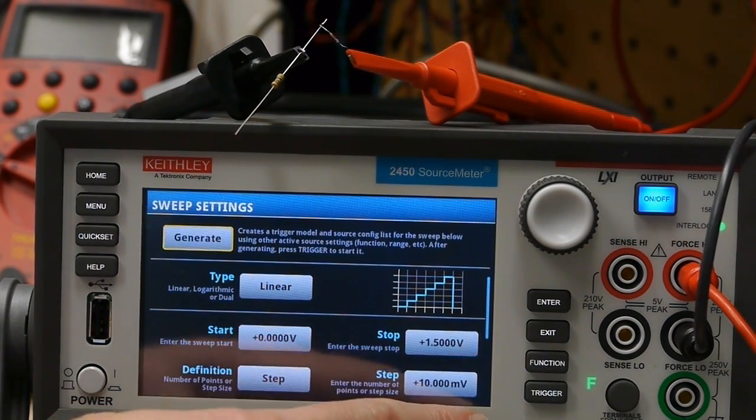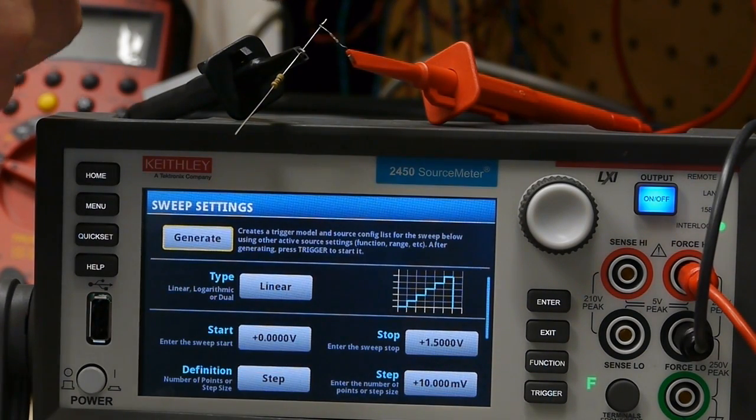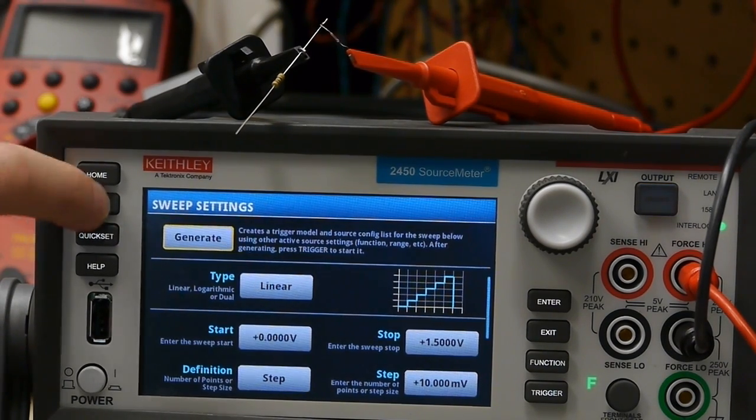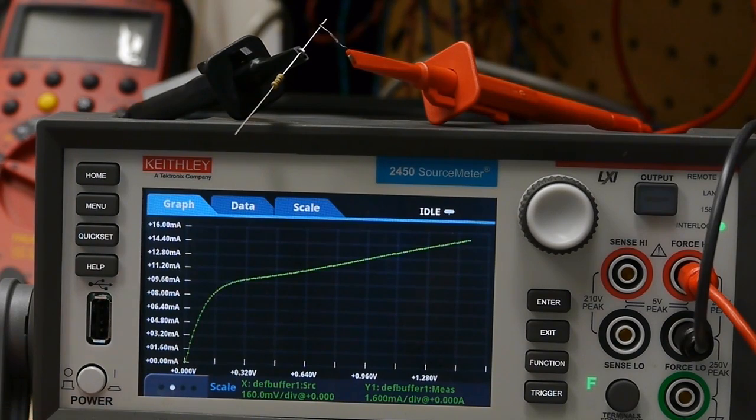Then we can press trigger and what's happening is it's stepping the voltage up slowly and measuring the current. And so then if we check out the graph of what just happened we can see starting at zero volts of course zero current and as it gets up to about 1.5 volts it's doing 15 milliamps just like it says on the package.